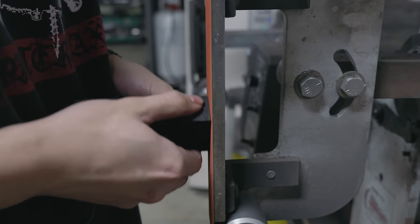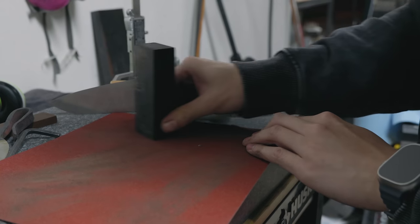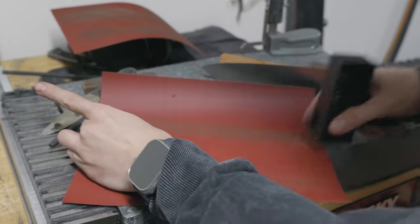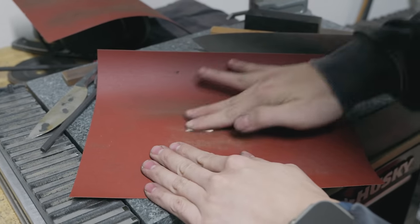Once the handle block was fit perfectly to the tang, it was time to start getting the pieces actually ready for glue up. And the only thing that I do for that is I go back to the granite block and I sand everything perfectly flat.